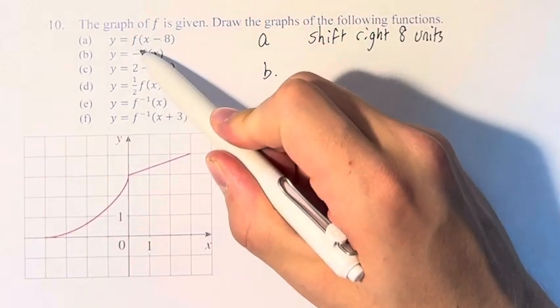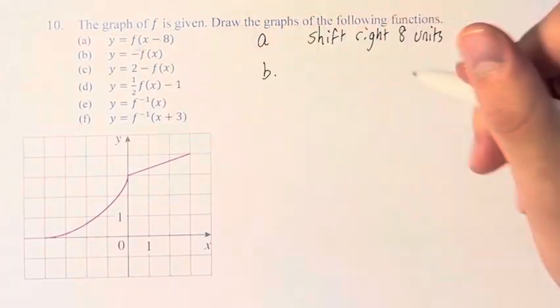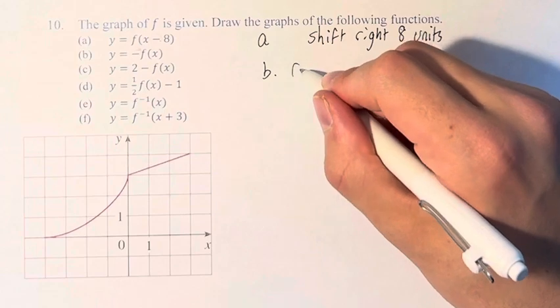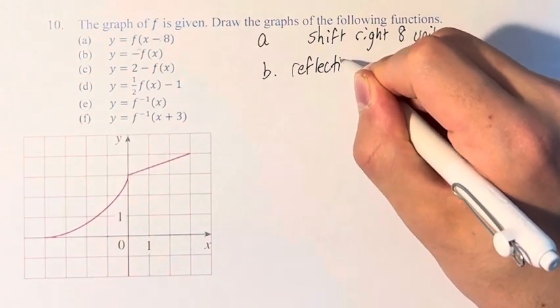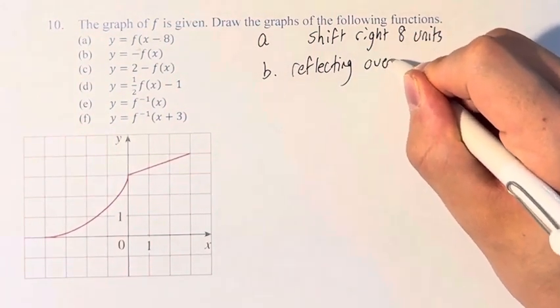For part b, we are multiplying by negative 1. It's being done outside of the function, so that is reflecting over the x-axis.